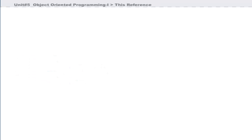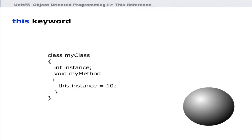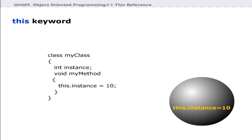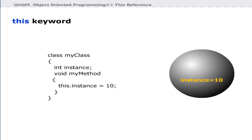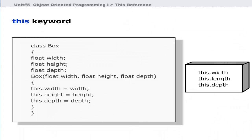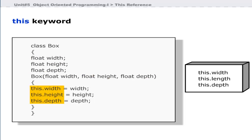When you define a method in a class, you can use the this keyword to refer to the object of the class in which the method is defined. Although it seems redundant because instance variables can be accessed directly by methods of the same class, it is helpful in situations when local variables in the parameter list hide instance variables. When instance variables and local variables have the same name, using this keyword accesses the instance variables of the object on which the method is called.